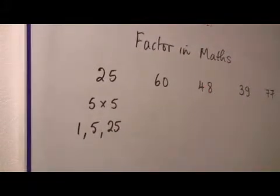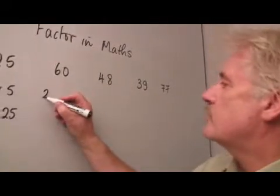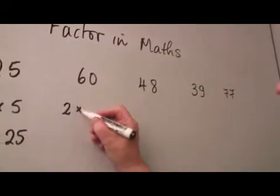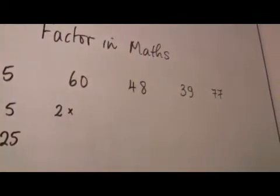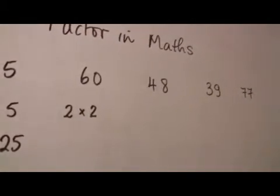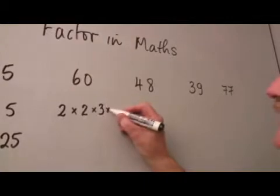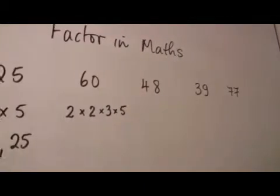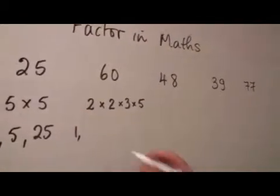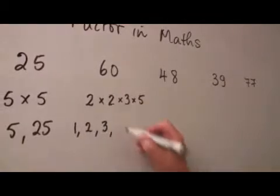Now, what about 60? Well, we know 60 will divide by 2, which gives you 30. And we know that 30, again, we can divide by 2. So, it's 2 by 2, 4. 4 fifteens, and we know 15 is 3 times 5. So, the factors of 60 are 1, 2, 3, 5.